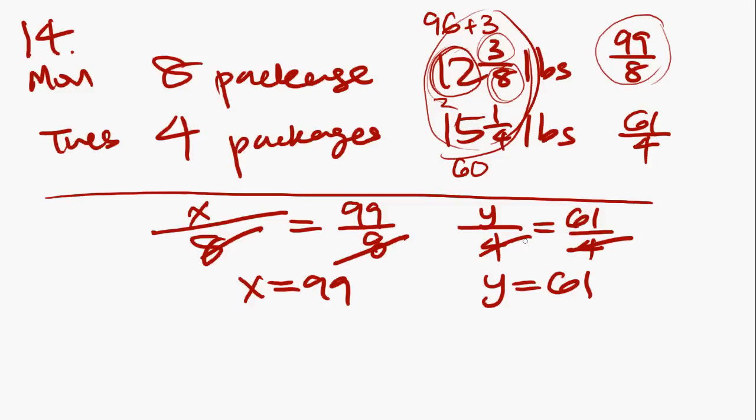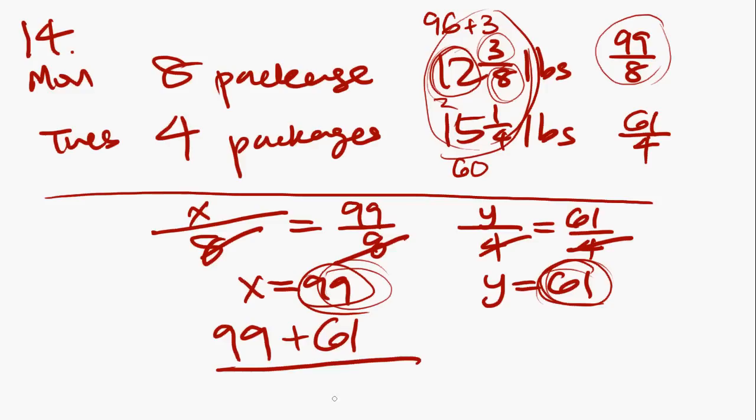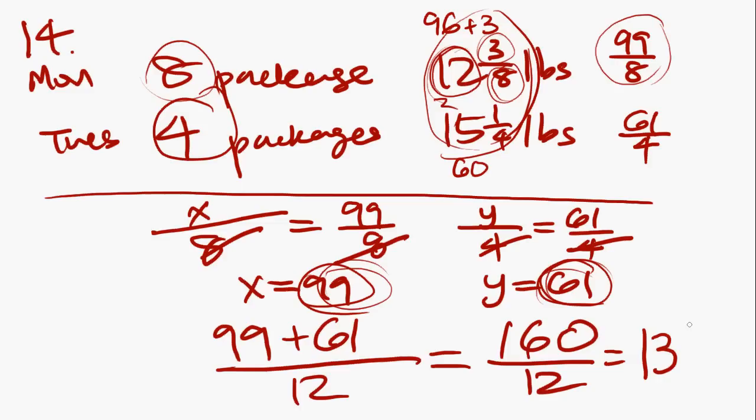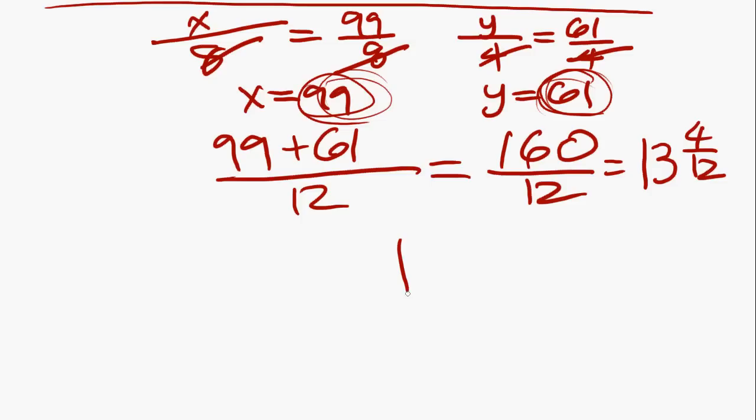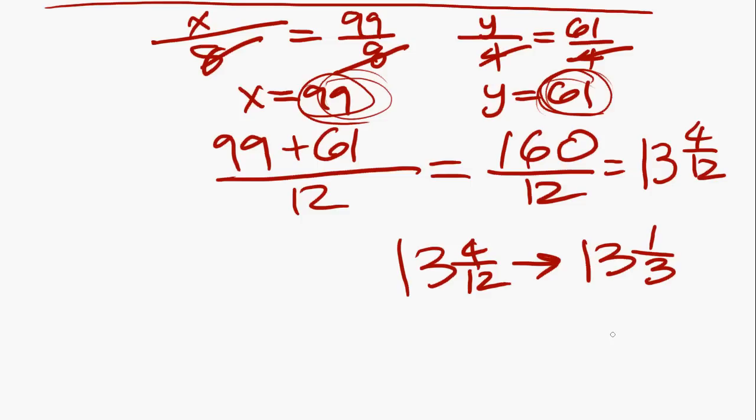The actual thing you're trying to solve for here is the average weight in pounds of all the packages on both days. So we're going to take the total weight of all the packages on Monday and the total weight of all the packages on Tuesday, add them together, and divide them by the total number of packages. 99 plus 61 over 12 equals 160 over 12, which equals 13 and 4/12. We're going to have to simplify: 13 and 4/12 equals 13 and 1/3, and that is answer choice A.